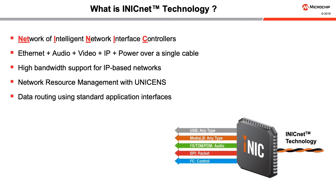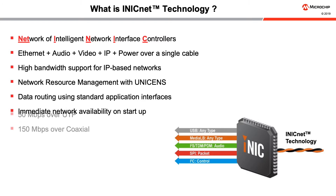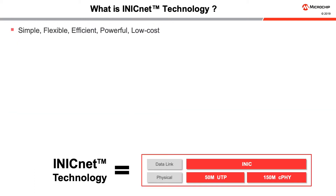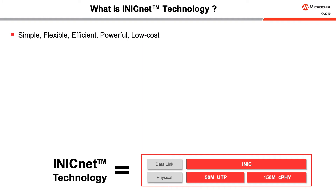In fact, iNIC NET nodes do not even require a local processor. The iNIC in a remote node can be configured over the network and peripheral components can be managed via remote I2C. The network starts up immediately and applications attach themselves to it as their processors boot up. The communication channel is quickly available for critical functions. iNIC NET supports the transport of 50 megabits per second over UTP wires or 150 megabits per second over coax. iNIC NET technology offers a very simple and flexible network with very efficient, powerful, and cost-effective data transport. The nodes can be arranged in any order without the need for reprogramming, and the network operations will be exactly the same.